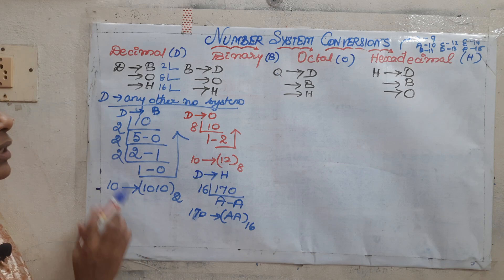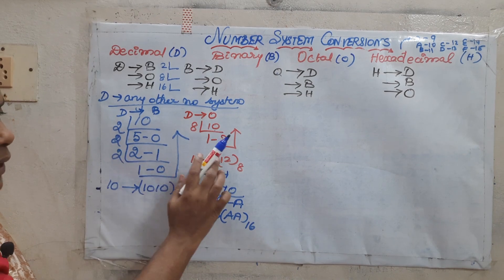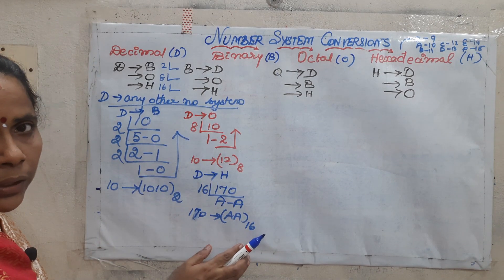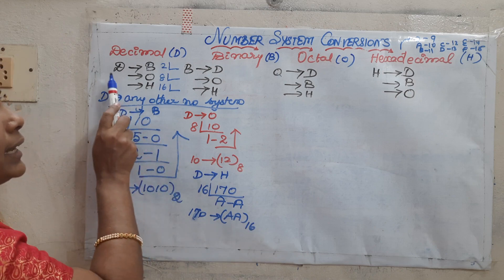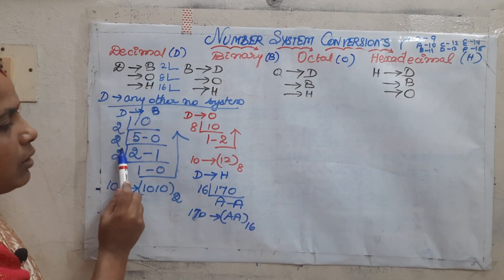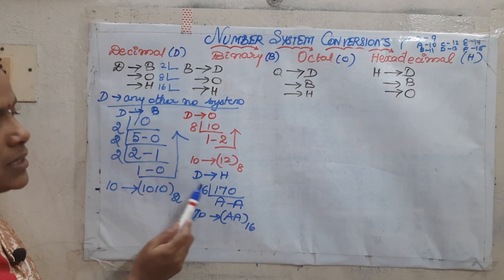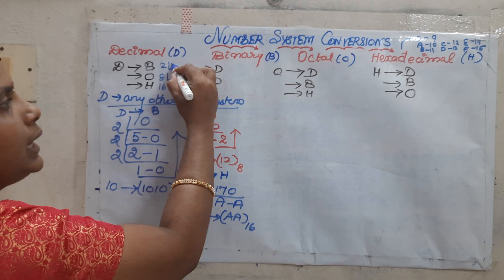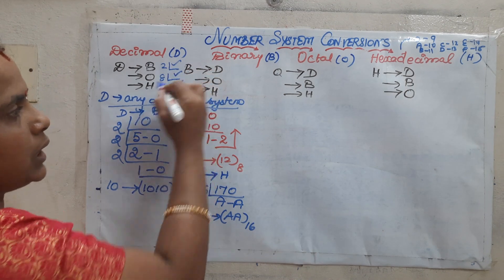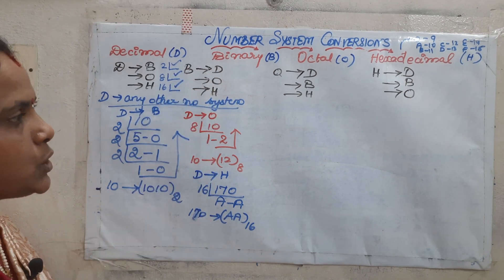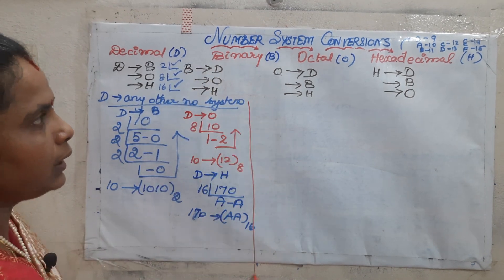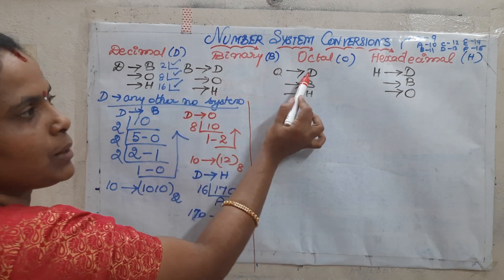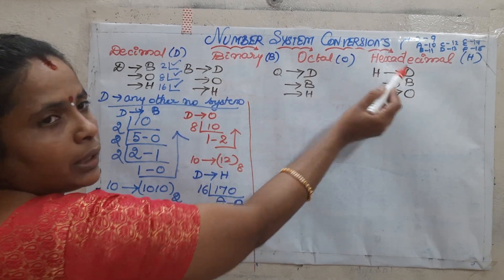The general rule is: to convert decimal to any other number system, divide by its radix. Now we have seen those 3 conversions. Next we will move on to any other number system to decimal.